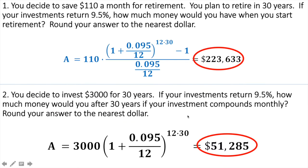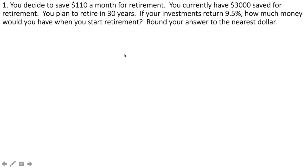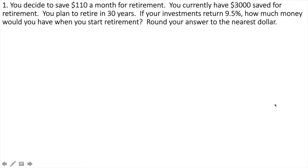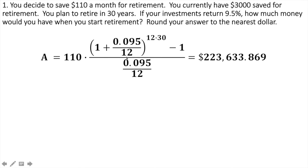What we're going to do is combine these two together. You save $110 a month — you currently have $3,000 saved for retirement and you plan to retire in 30 years. The investment rate is 9.5%, compounded monthly. This is two separate problems and we add the two together. First: if I save $110 a month for 30 years at 9.5% interest, how much would I have? $110 a month at 9.5% for 30 years gives me $223,000-and-change. Notice I did not round this one — I'm going to keep going because I won't round until I get the final answer.